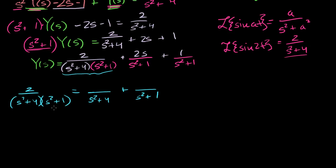Since both denominators are of degree 2, the numerators are going to be of degree 1. So one will be (as + b) over (s squared plus 4), and the other will be (cs + d) over (s squared plus 1). This is just pure partial fraction decomposition algebra. I'm assuming the expression can be broken into two fractions of this form, and now I need to solve for a, b, c, and d.